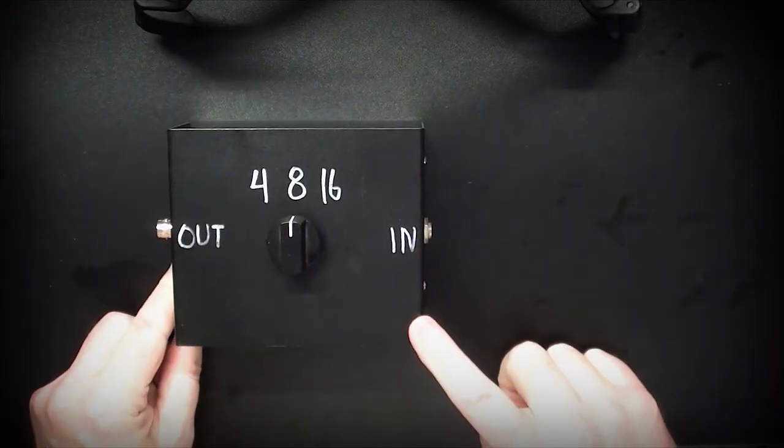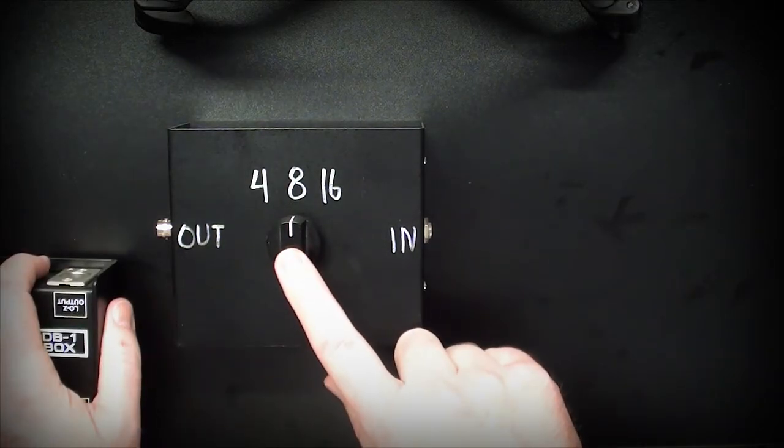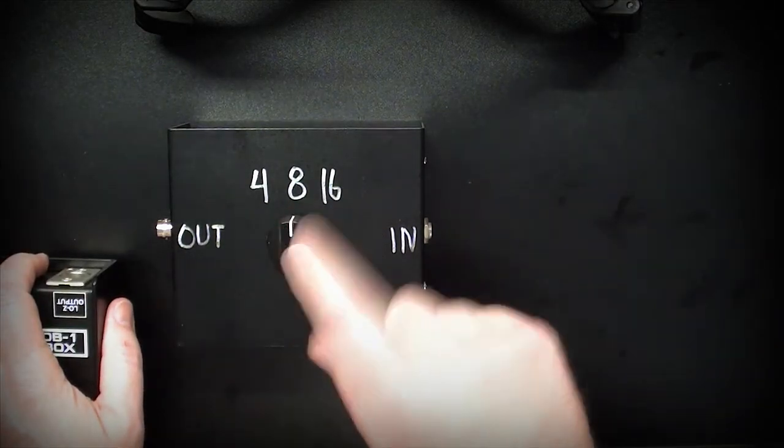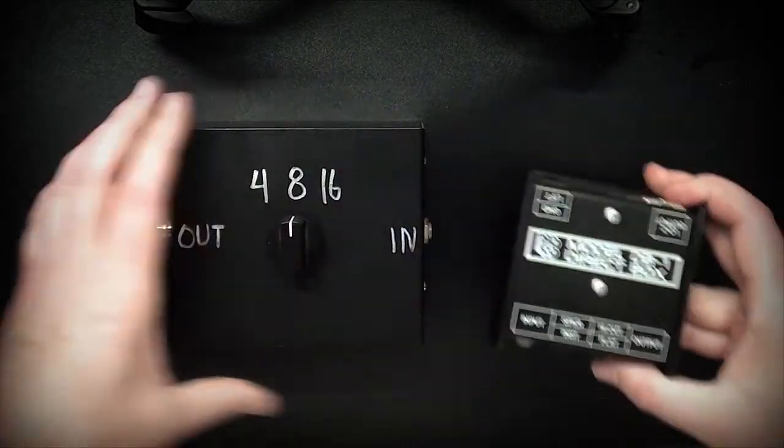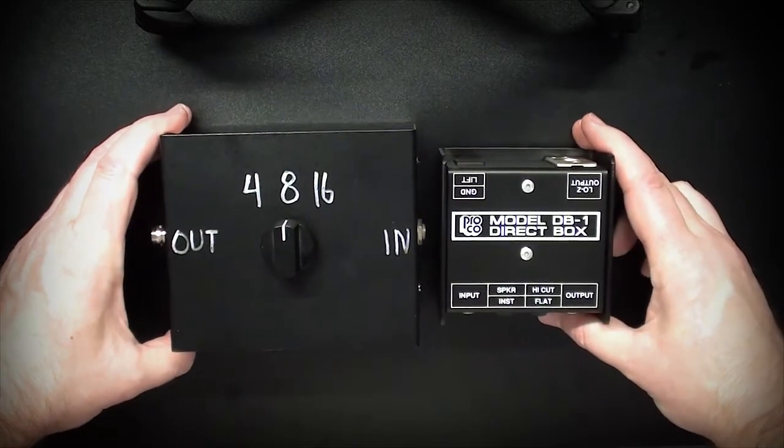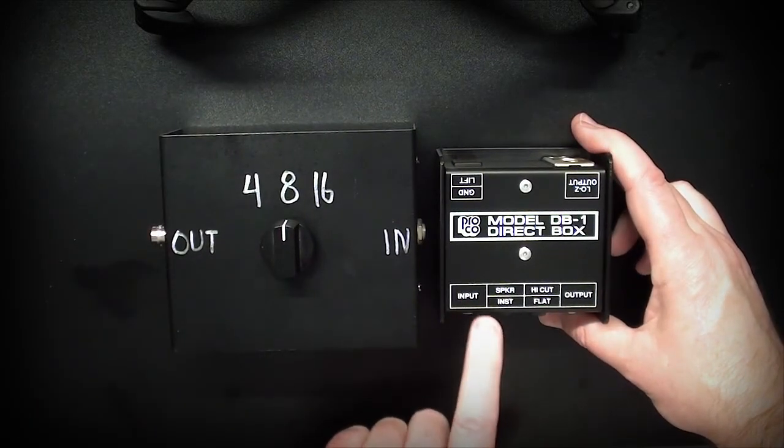It's also possible to use this for direct silent recording. You would set the selector to whatever your amp usually uses for a speaker cabinet - 4, 8, or 16 ohms. Then we can bring in our little friend, the Model DB1 direct box.